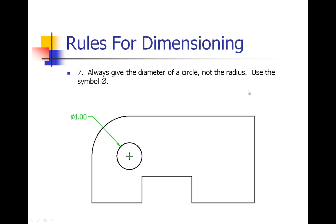Number seven: always give the diameter of a circle, not the radius. If you have a drawing and you have a full complete circle, you are always going to give a diameter measurement, and you are going to use this symbol which looks like an O with a line through it, that stands for diameter. Anytime you have a full circle.